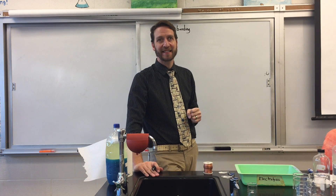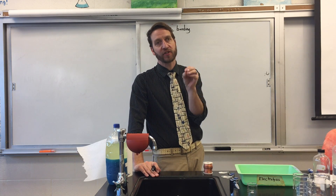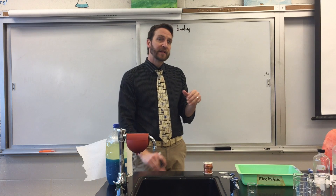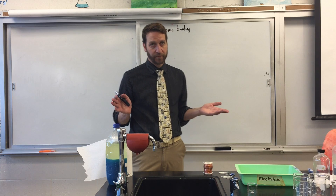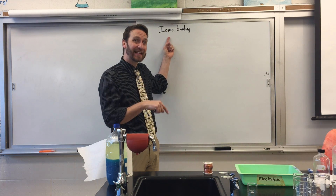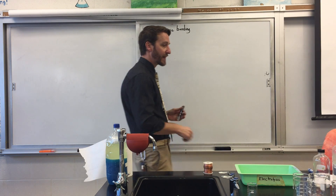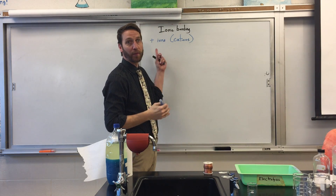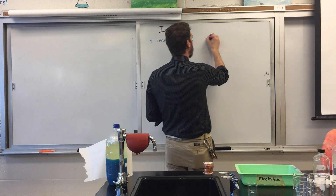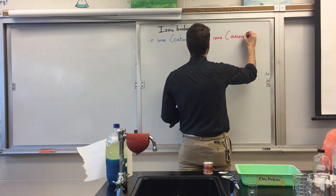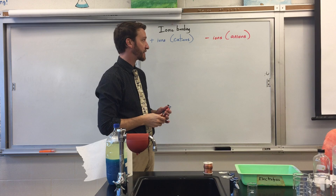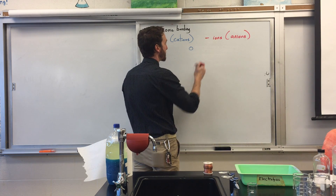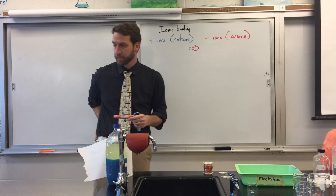We talked about this already when we did the PhET simulation for building an atom. When you build an atom, you put a certain number of protons in the nucleus — protons are positively charged, and the number of protons determines what element it is. Elements can have an equal number of protons and electrons, in which case they're neutral. If they have more electrons than protons, or fewer electrons than protons, they become an ion. There are two main types: positive ions, which we call cations, and negative ions, which we call anions. Cations form when there are more protons than electrons; anions form when there are more electrons than protons. When a positive ion and a negative ion come near each other, they attract and form an ionic bond because opposites attract.